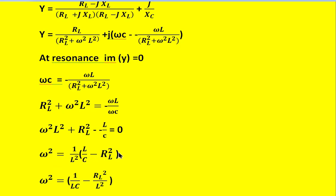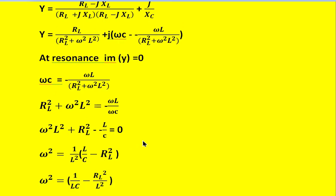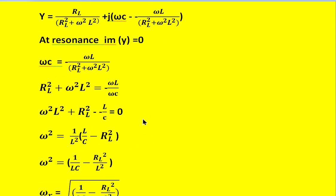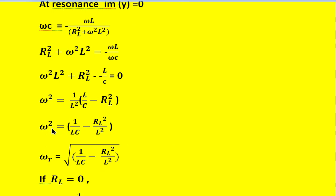Further, it can be written as ω²·L² plus R_L squared minus L divided by C equals zero. And further, ω² equals 1 divided by L² times (L divided by C minus R_L squared). With further simplification, ω² equals 1 divided by L·C minus R_L squared divided by L². Because under resonance condition this ω is represented as ω_R, the equation becomes: ω_R equals the square root of (1 divided by L·C minus R_L squared divided by L²).